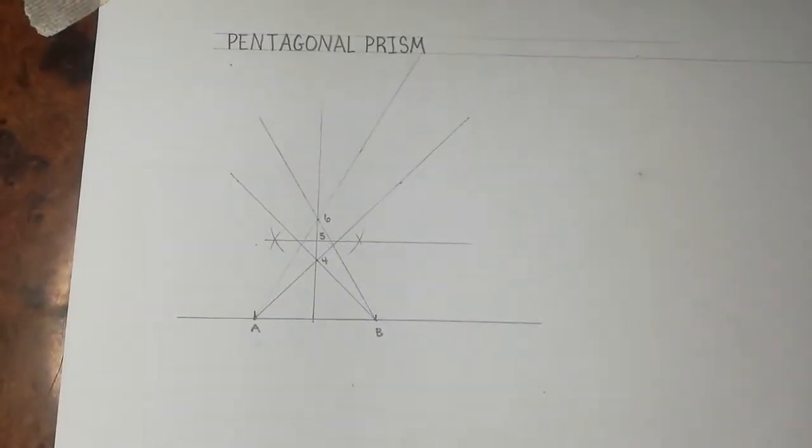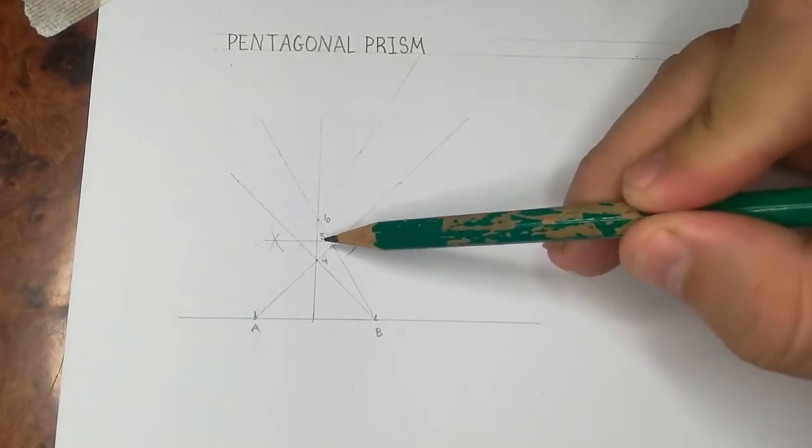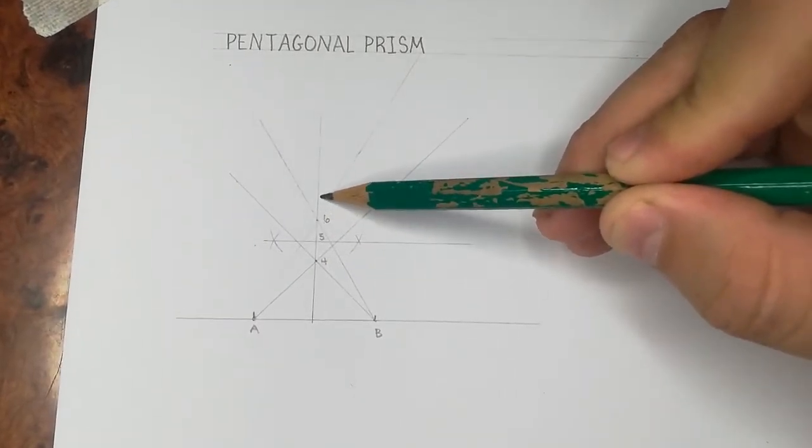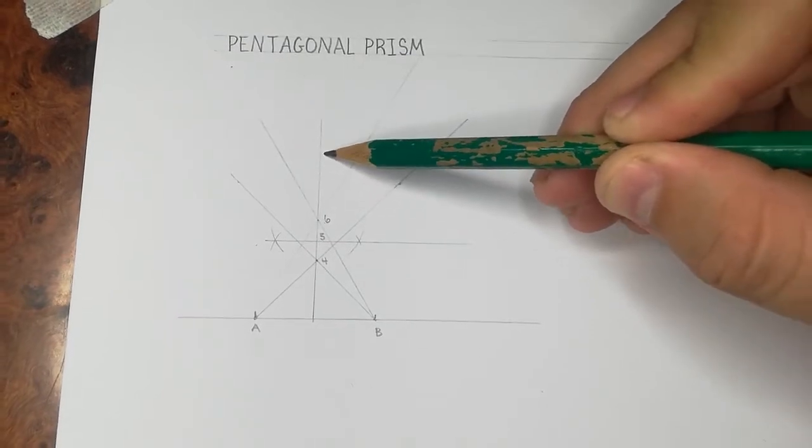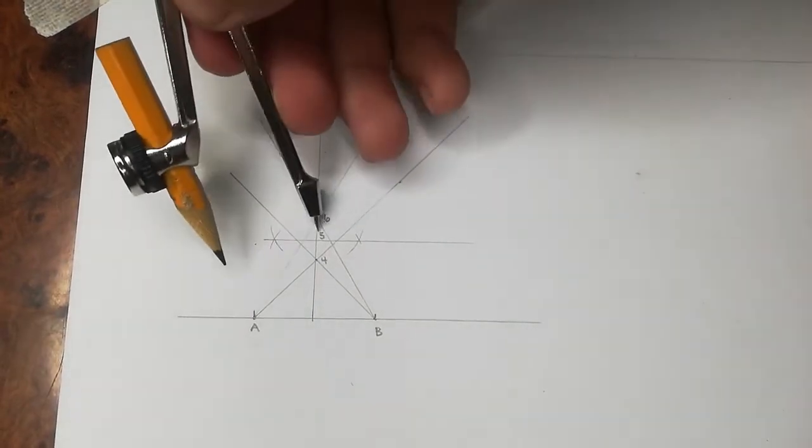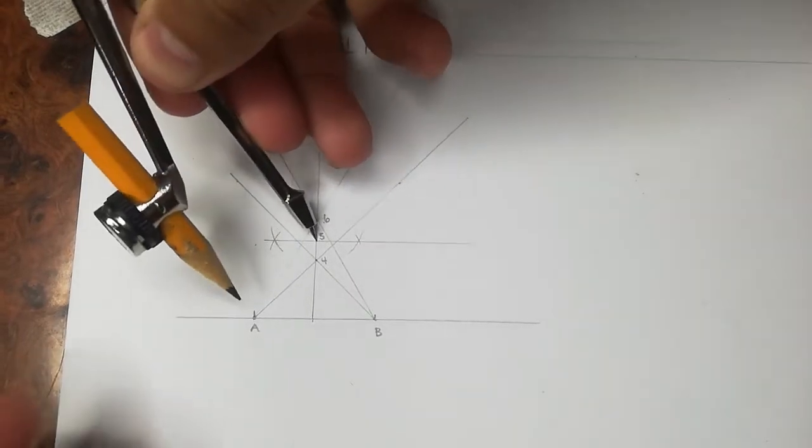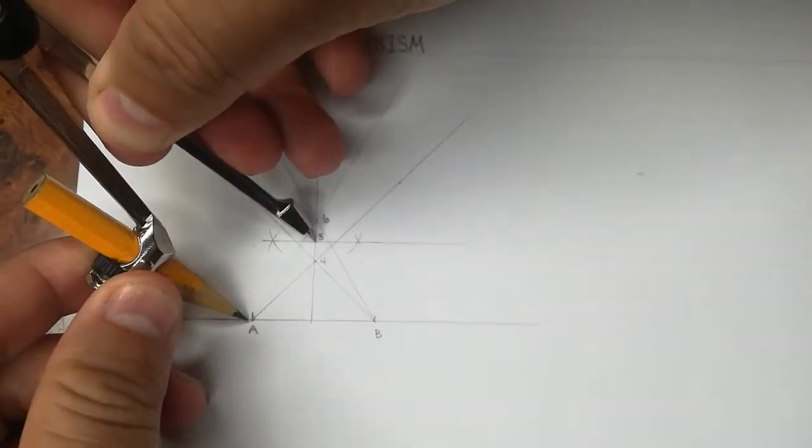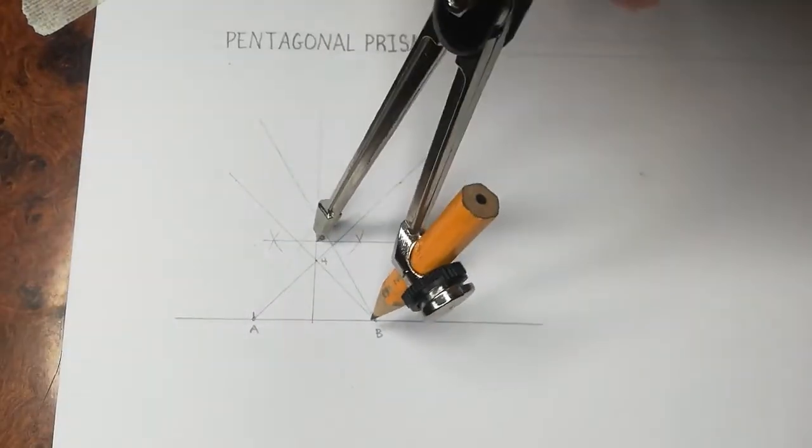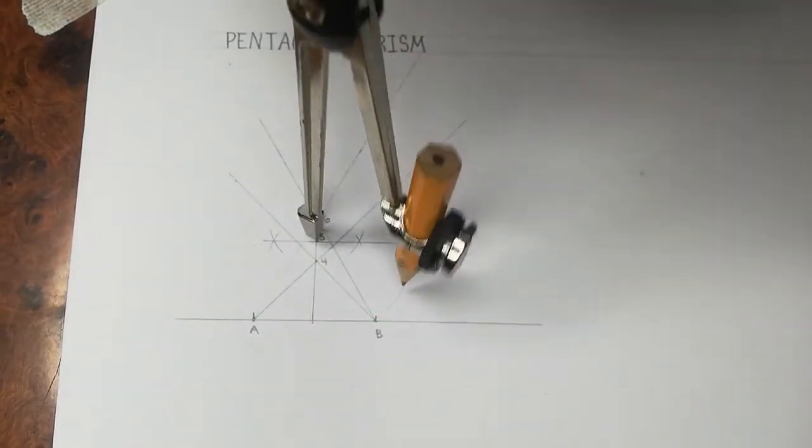You can also transfer the measurements measured from 5 to 6 and transfer it upwards to get the point 7, 8, 9, 10, and so forth. And that would create centers for you to draw a circle with a bigger radius that would fit a 7, 8, 9-sided polygon. For now, we want a 5, so from 5, I open to E and then I draw my circle.